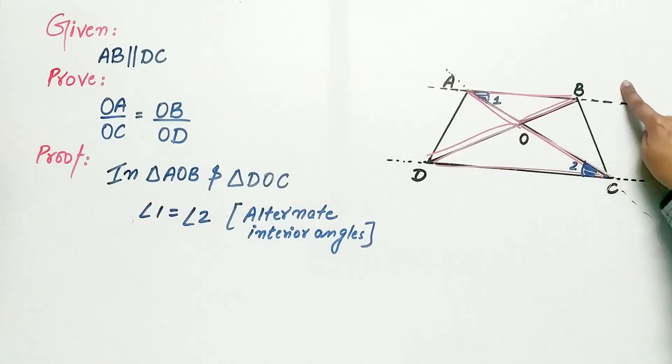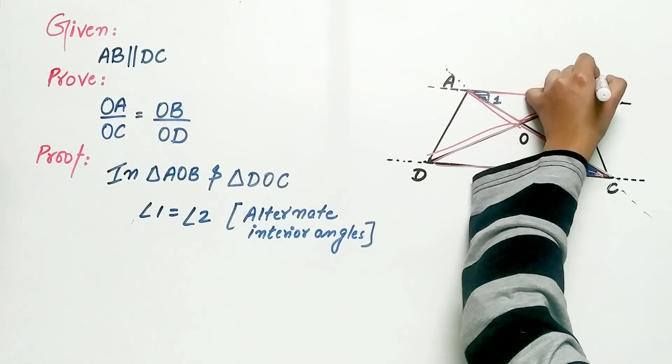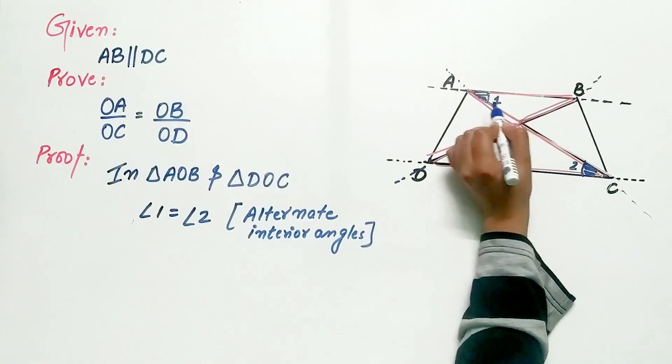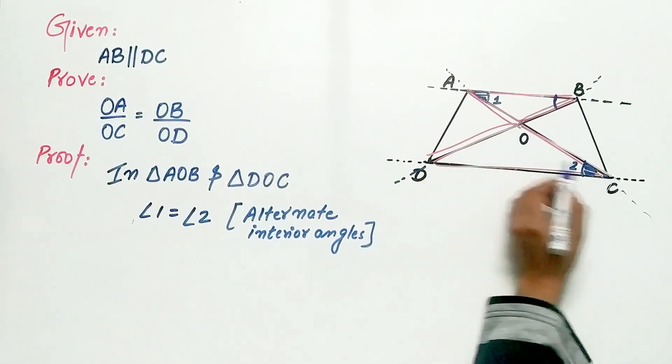Similarly, BD also intersects AB and DC. Hence, angle ABO is equal to angle ODC.